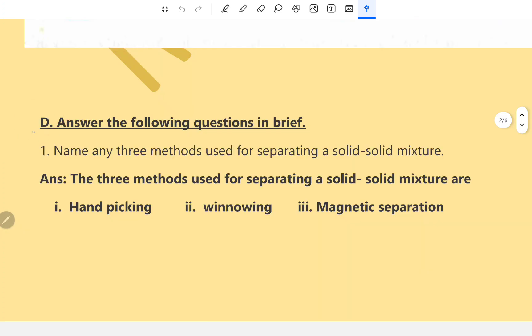Now answer the following question in brief. Name any three methods used for separating a solid-solid mixture. The three methods used for separating solid-solid mixtures are hand picking, winnowing and magnetic separation.